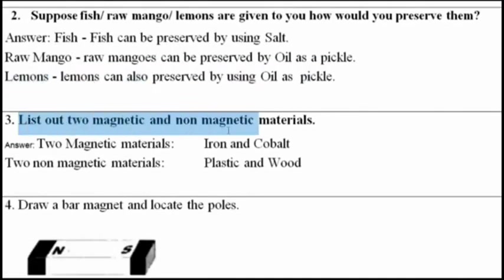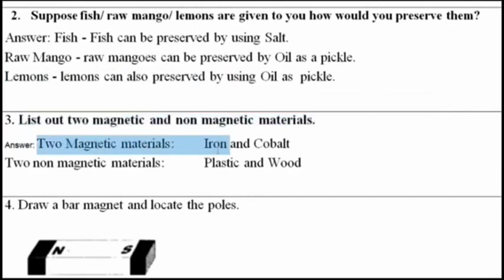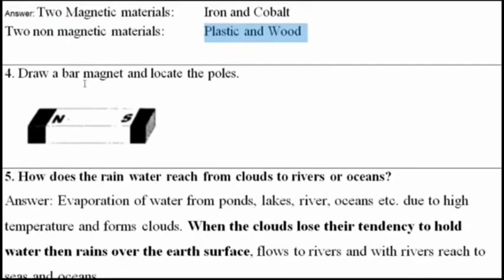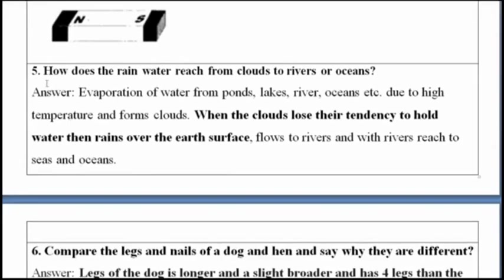Third question: list out two magnetic and two non-magnetic materials. Two magnetic materials are iron and cobalt. Two non-magnetic materials are plastic and wood. Fourth question: draw a bar magnet and locate the poles. This is a bar magnet with a north pole and a south pole.